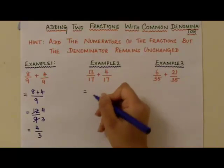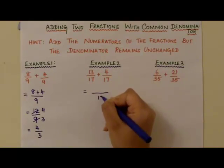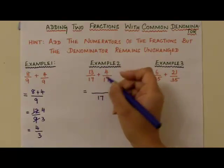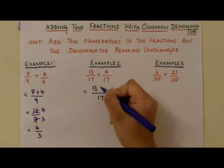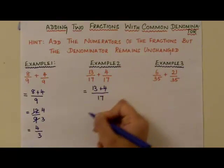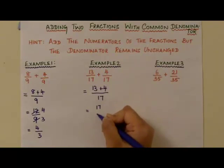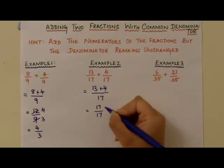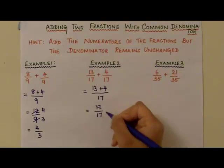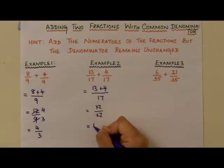Therefore, the resultant fraction will have the same denominator but the numerators can be added. So it is 13 plus 4. So 13 plus 4 will become 17 divided by 17. You can see that 17 divided by 17, you can cancel it to make it a 1.